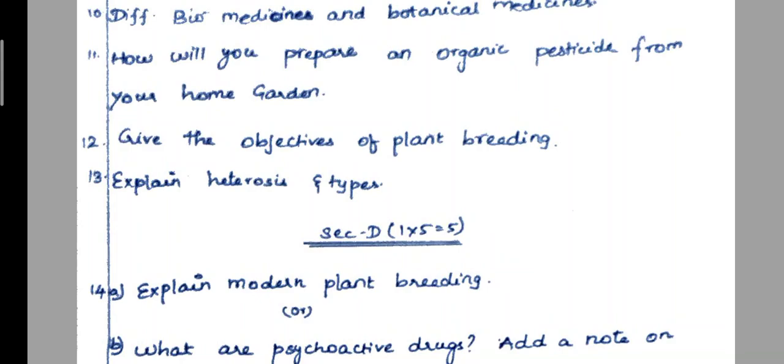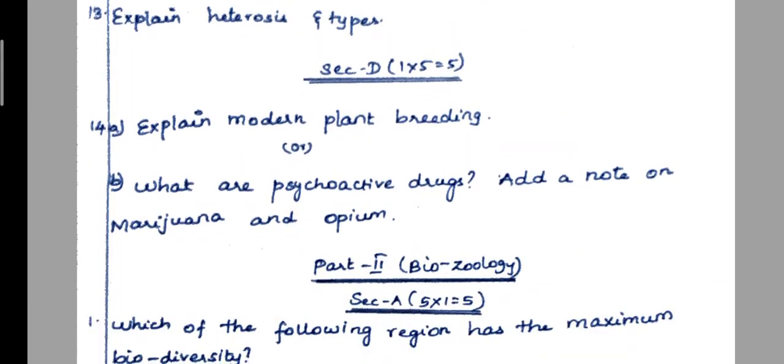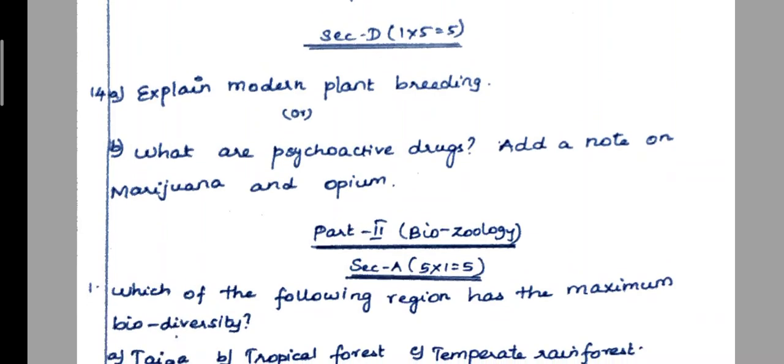13th question: explain etrosis and types. 5th question: explain modern plant breeding, or what are the psychoactive drugs? 12th question: add a note on opium.